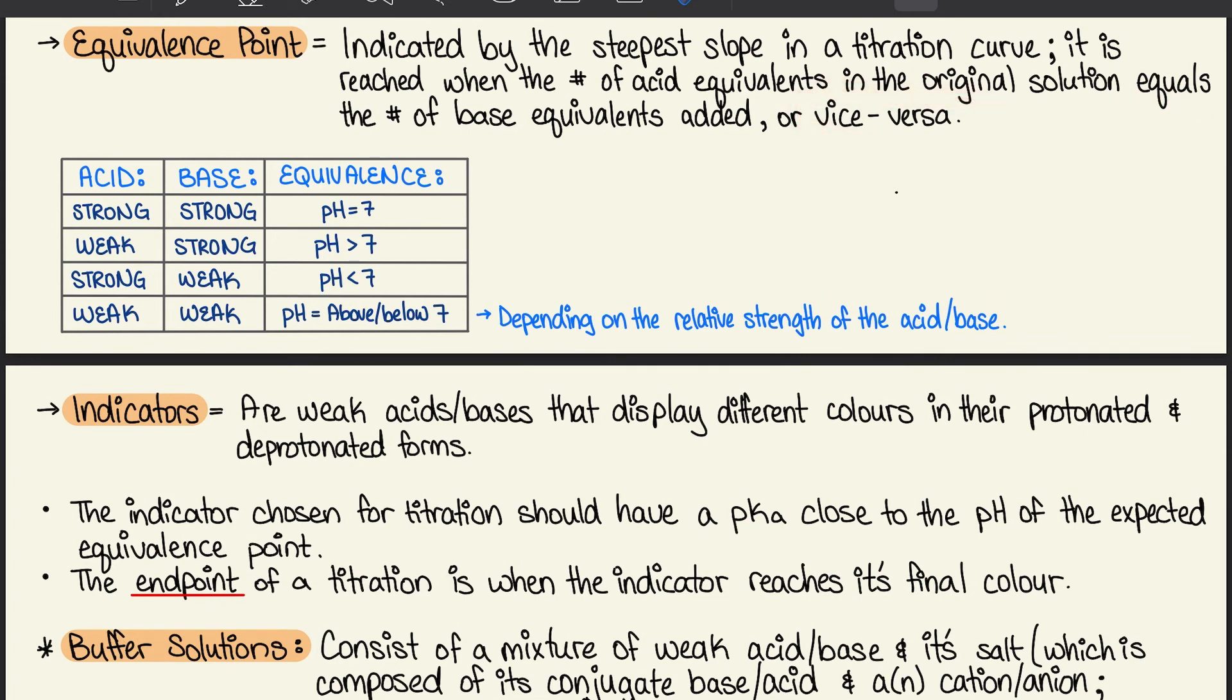Here we have a small table. If we have a strong acid and strong base, our equivalence will be pH equals 7. With a weak acid and strong base, our pH will be greater than 7. With a strong acid and weak base, our pH will be less than 7. With both weak acid and base, the pH may be above or below 7, depending on the relative strength of the acid and base in question.